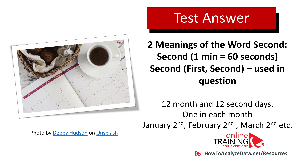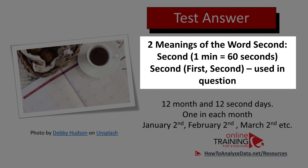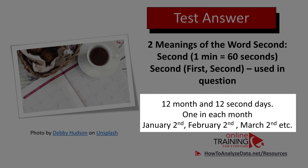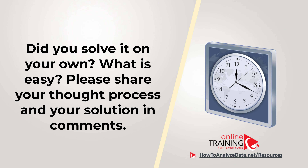This is a tricky question that challenges your understanding of the word 'second.' There are two meanings: one is a unit of time — one minute has 60 seconds. The other is ordinal — second as in first and second. The second meaning is used here. In a year there are 12 months, and there are 12 second days — one in each month: January 2nd, February 2nd, March 2nd, and so on. Hopefully you've nailed this question — it gives you some laughs and you now know how to answer similar problems.